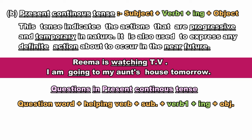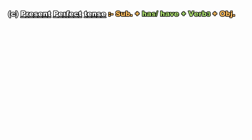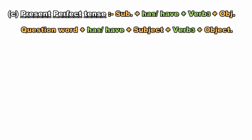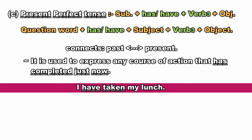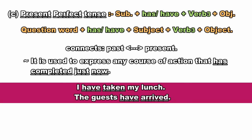Present Perfect Tense. This is the structure of sentences in present perfect tense: Subject + has/have + V3 + Object. For question framing: Question Word + has/have + Subject + V3 + Object. Present perfect tense connects the past with the present. It is used to express any course of action that has completed just now. Present perfect tense abhi abhi ya haal filhaal khatm hue kari ke liye use hota hai. For example: 'I have taken my lunch', 'The guests have arrived.'